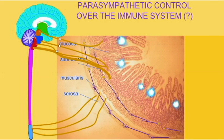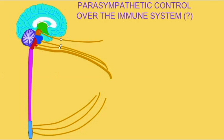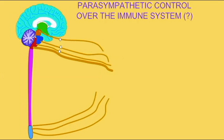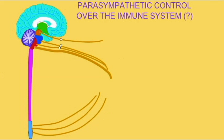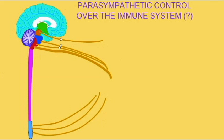But in general, it seems that the direct control over the immune system is the province of the sympathetic division rather than the parasympathetic division.